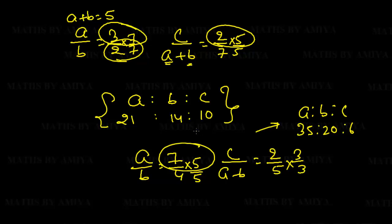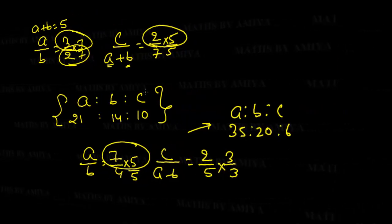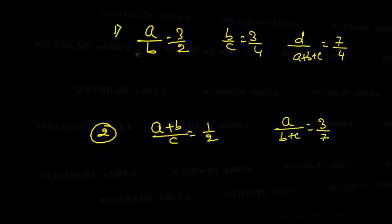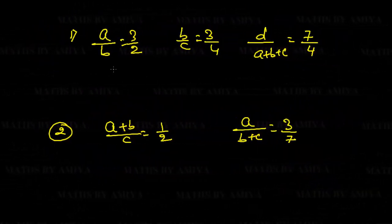We just need to find the common relationship and merge the ratio. Let's check this with a few more examples.